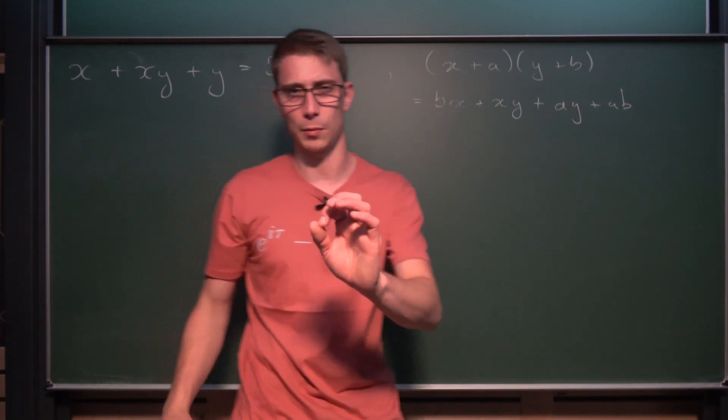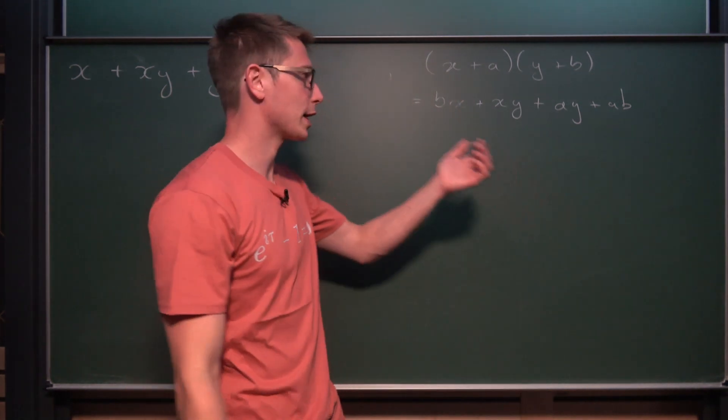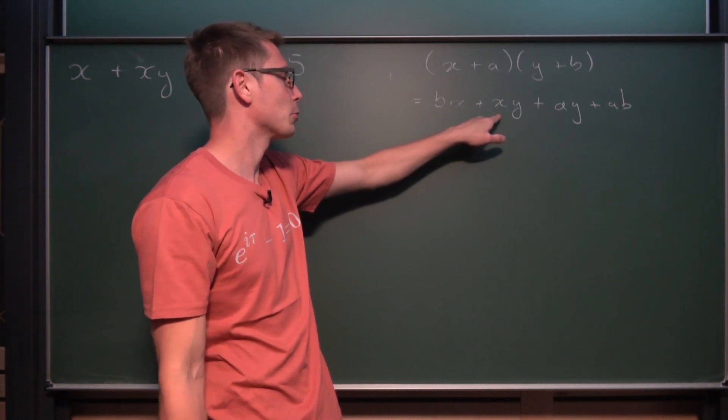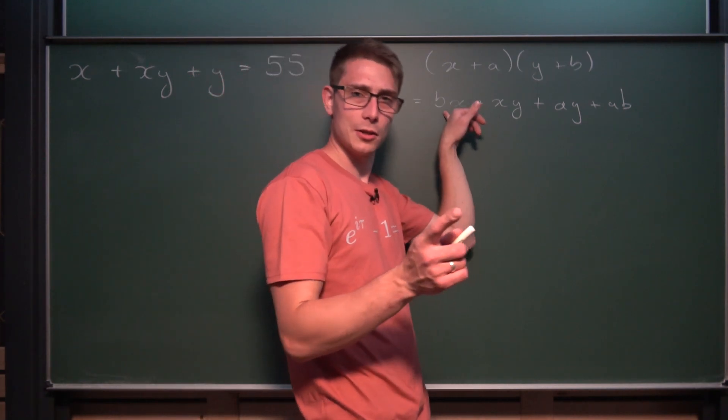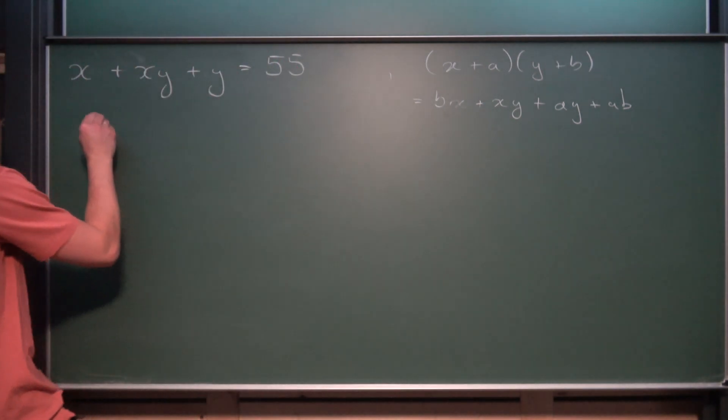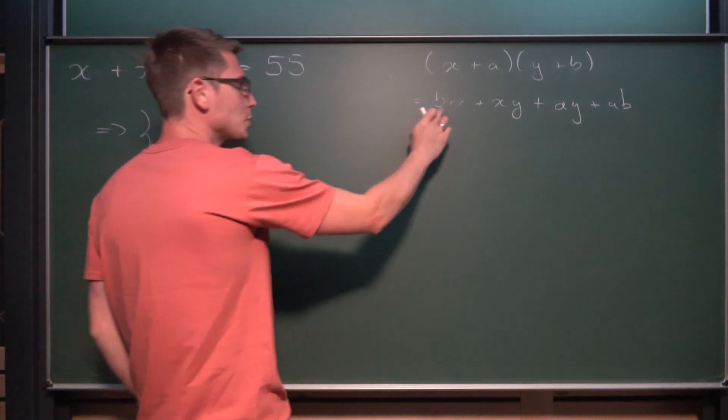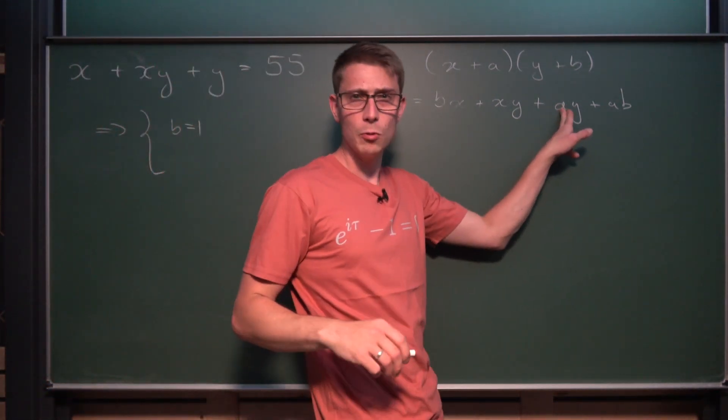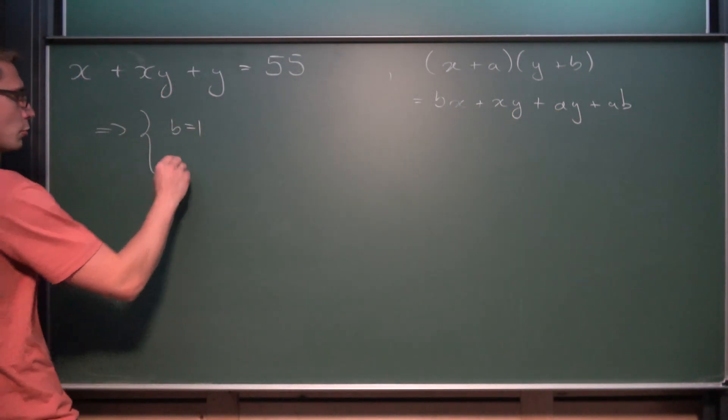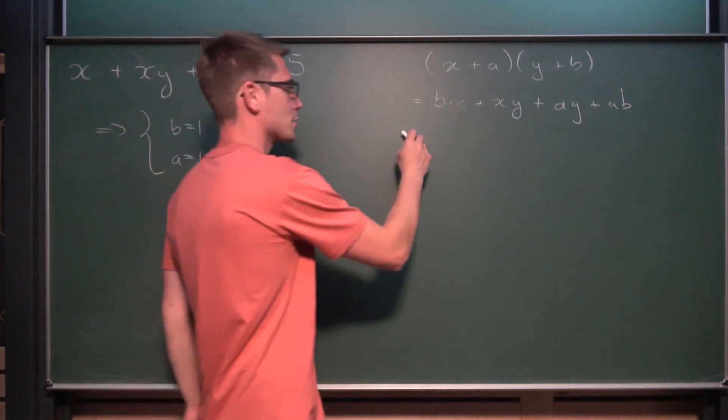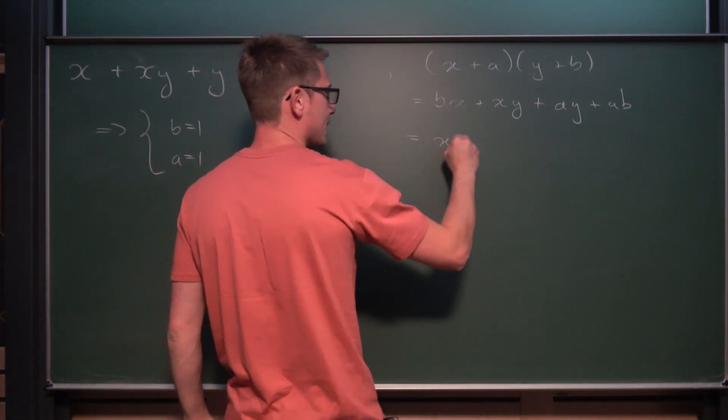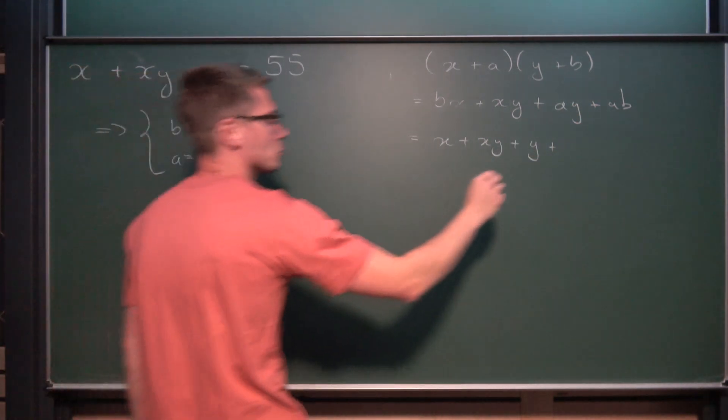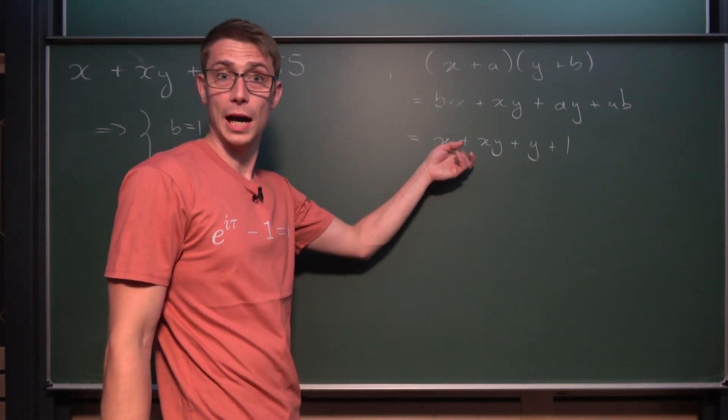So let us multiply everything out and see what we can recover from the original equation when doing this factorization here into linear factors. So what we are going to get is bx + xy + ay + ab. This is the constant part I was talking about. Now, what we are just going to do is, to recover our original one, is to compare coefficients. Now the xy part is already done, that is good. But what about the x part? Let us create a little system of equations. So what do we need in front of the x? We need a 1. So b must be equal to 1. And what do we need in front of the y? We need also a 1. That's the coefficient of y. So a is equal to 1 and b is equal to 1. So if you plug those values in, what we are going to get is x + xy + y + 1 = 55 + 1.